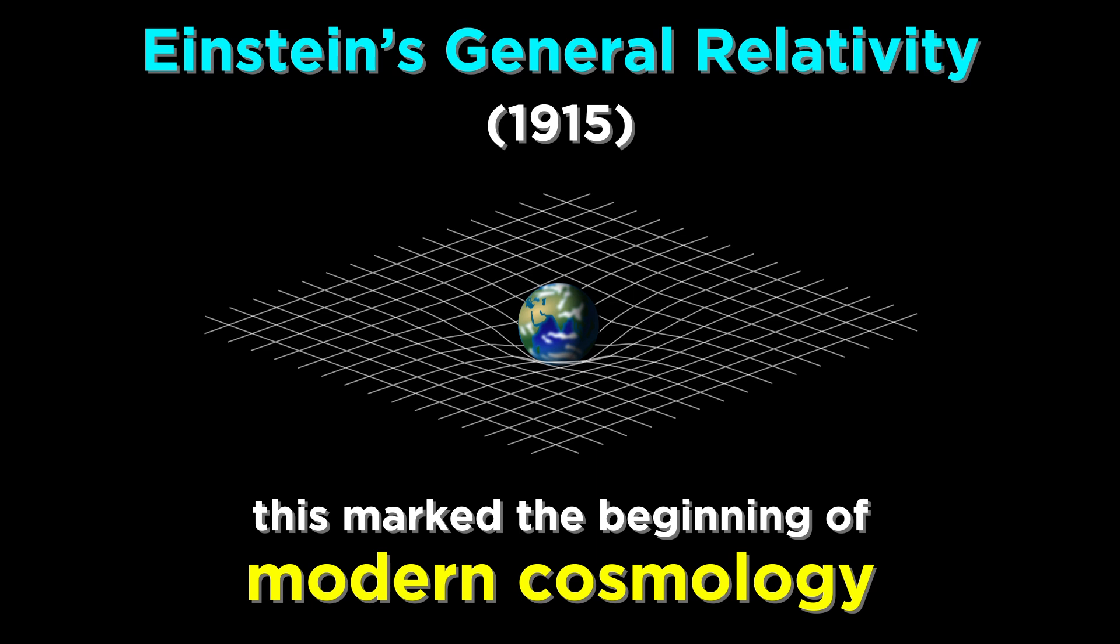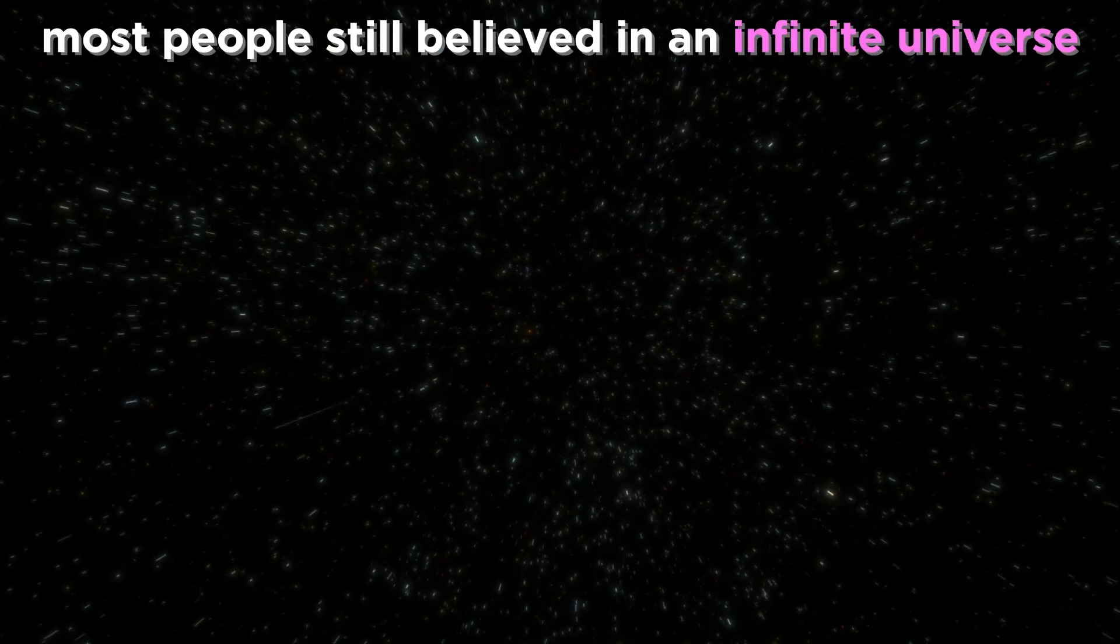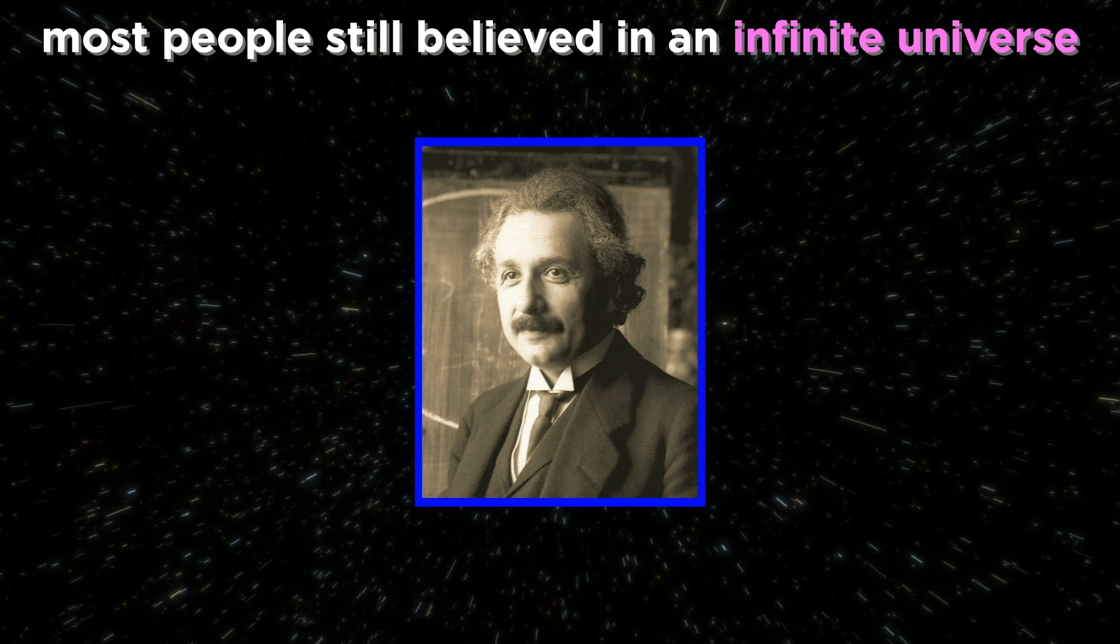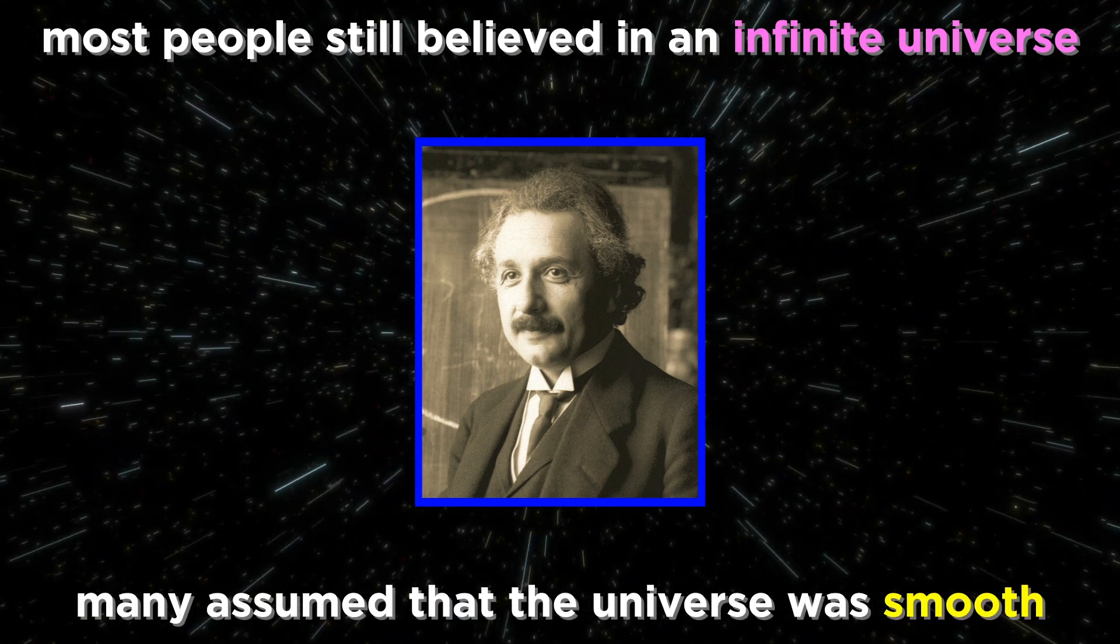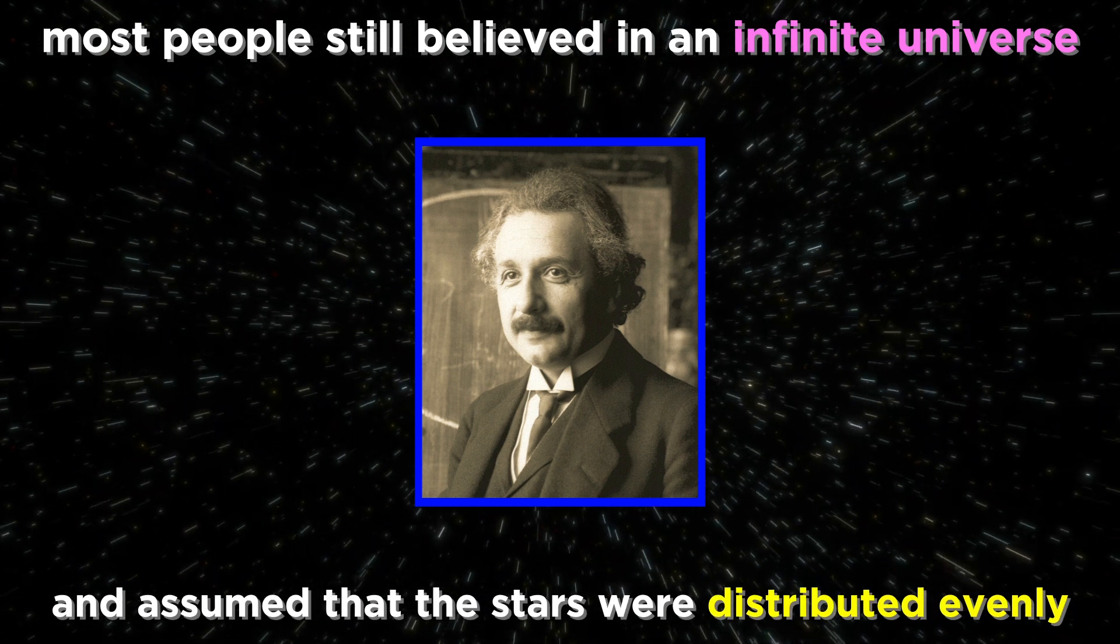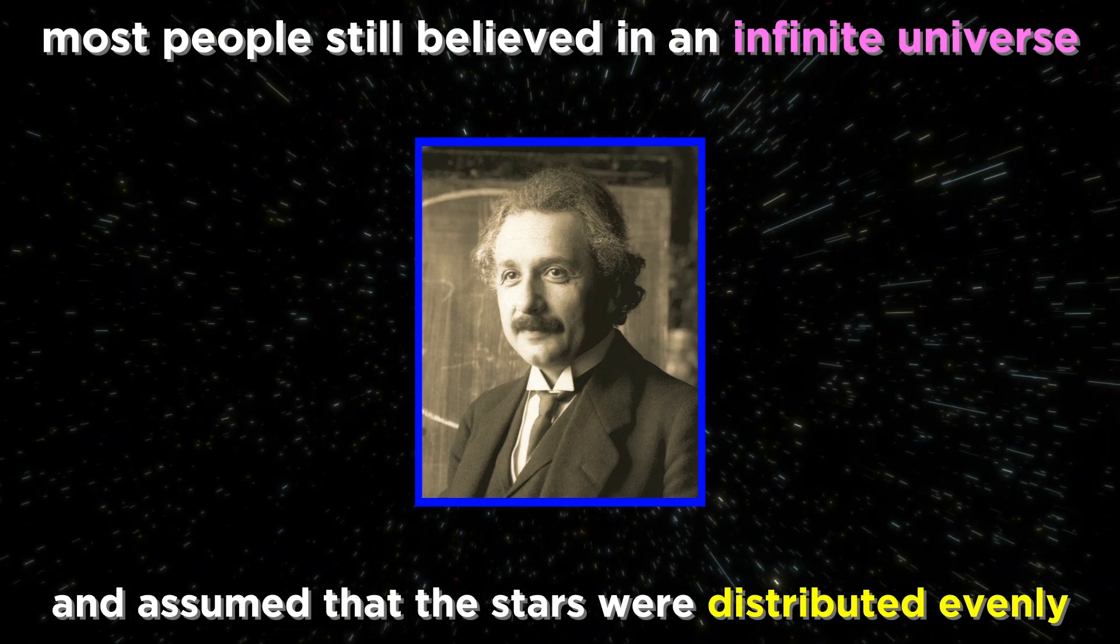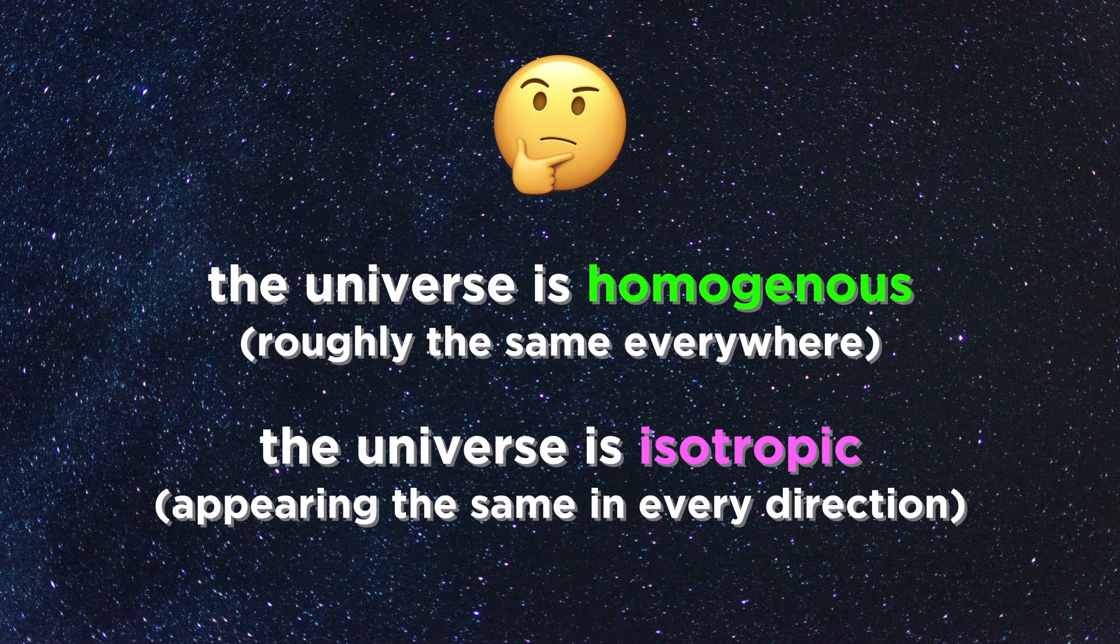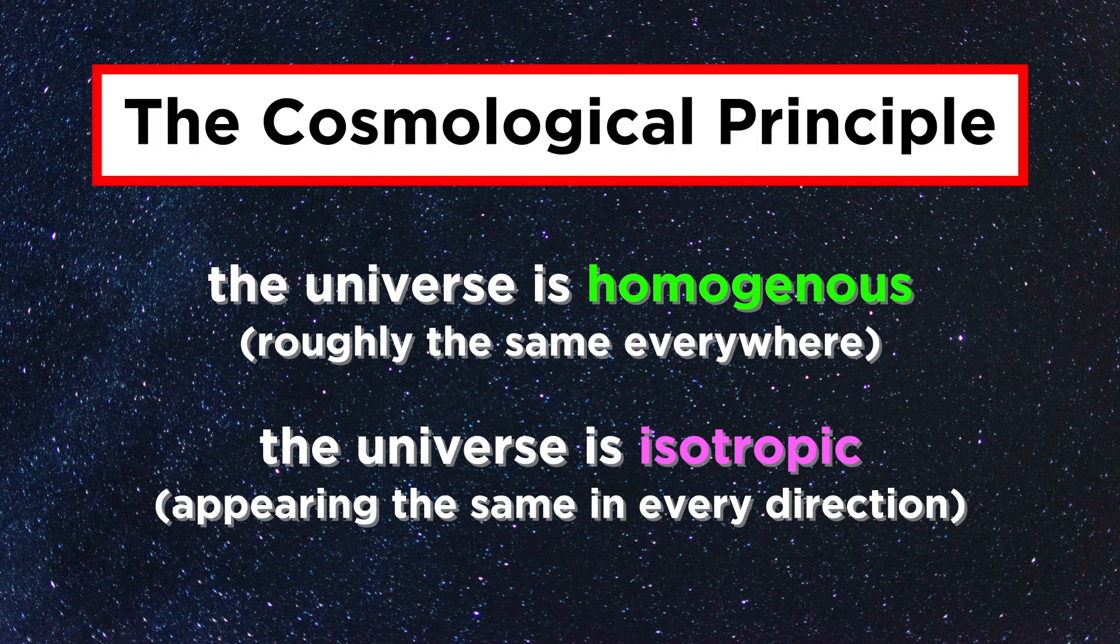In the beginning of the 20th century, modern cosmology began, thanks to Einstein's general relativity as a consistent mathematical description of the universe. At this time, the notion of an infinite universe was still quite prevalent, with such prominent supporters as even Einstein himself. He made the assumption, on next to no evidence, that the universe as a whole was quite smooth, with all of its galaxies distributed more or less evenly. This simplified universe was referred to as homogenous, or roughly the same everywhere, and isotropic, or appearing the same in every direction. These two assumptions together form the cosmological principle.